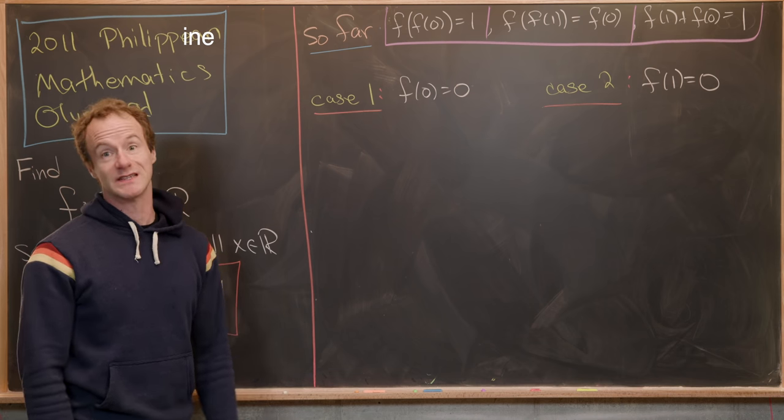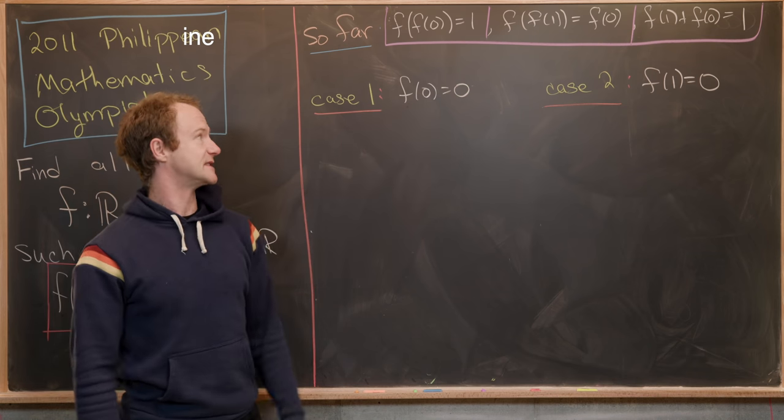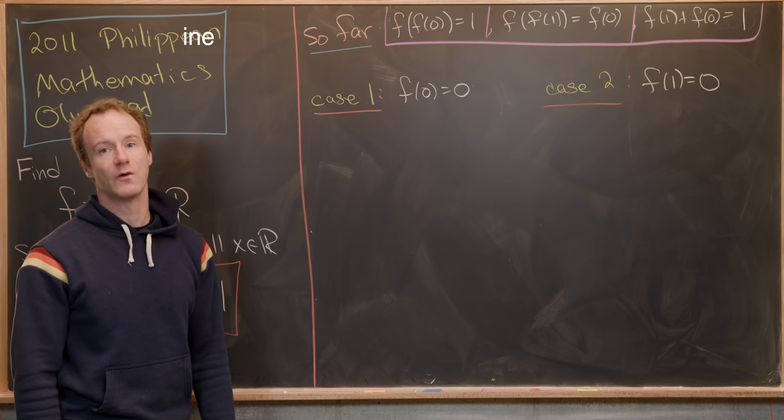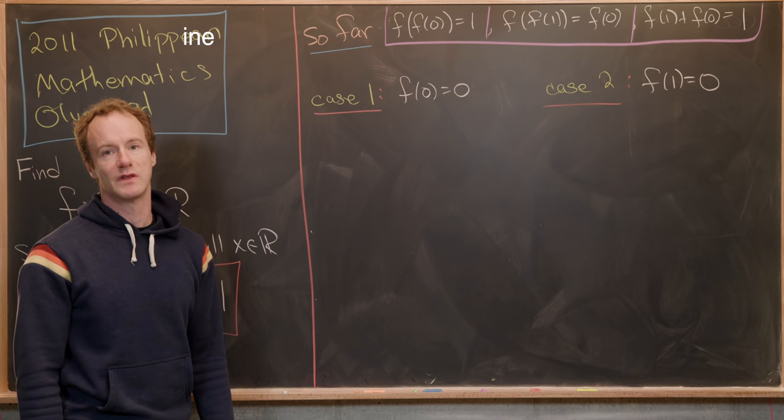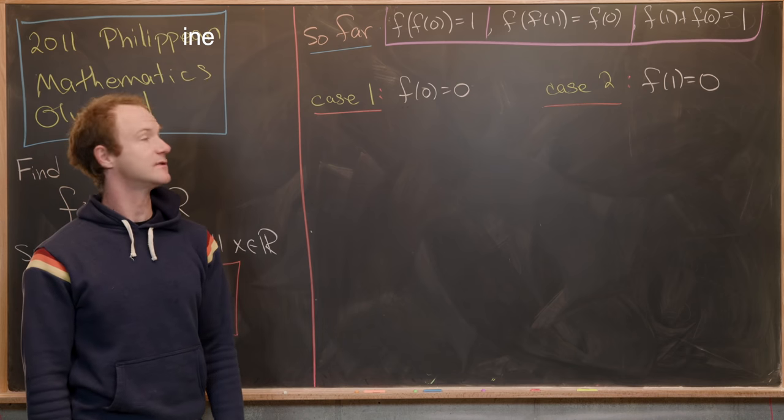So here, we'll break this into two cases. The first one is f(0) = 0. And the second case is f(1) = 0. And we'll see what each of these cases imply. So we'll start off with this part right here, which is f(0) = 0.